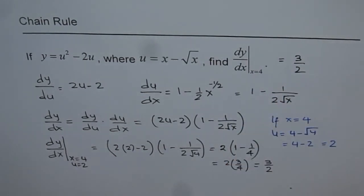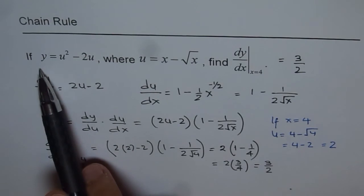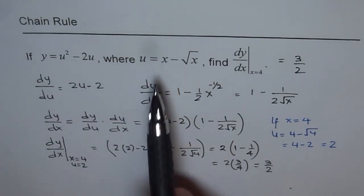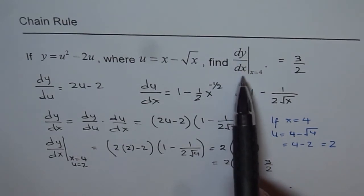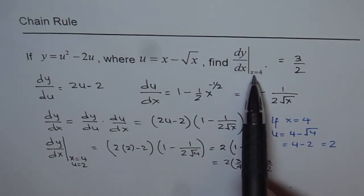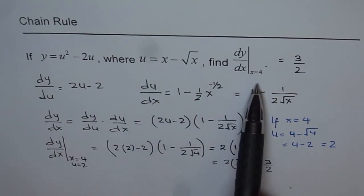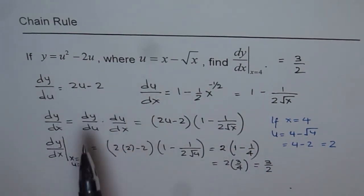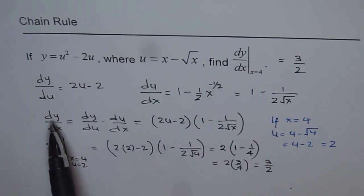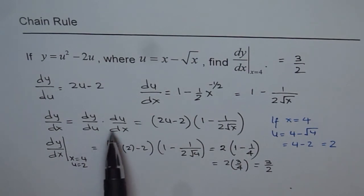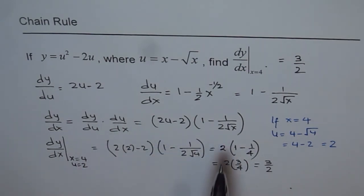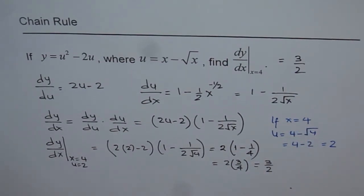Let me take you over these steps once again. We are given y as a function of u and u as a function of x, and we need to find the derivative of y with respect to x at x equals 4. Substituting x equals 4 into the expression for u gives u equals 2. Then applying the chain rule — dy/dx equals dy/du times du/dx — and substituting 4 for x and 2 for u gives us the derivative at that point.